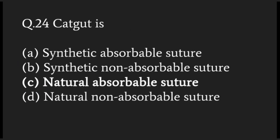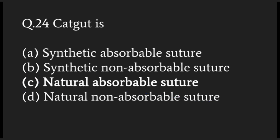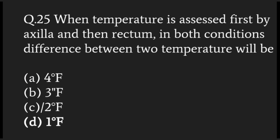Catgut is a natural absorbable suture which is derived from sheep gut. When temperature is assessed first by axilla and then rectum, the difference between the two temperatures will be one degree.